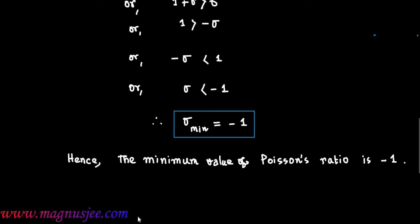Hence, the minimum value of Poisson's ratio is minus 1.